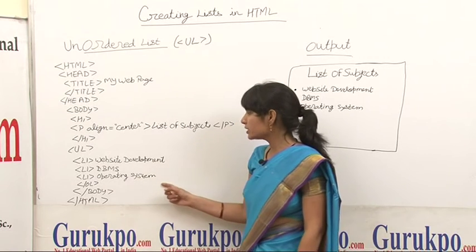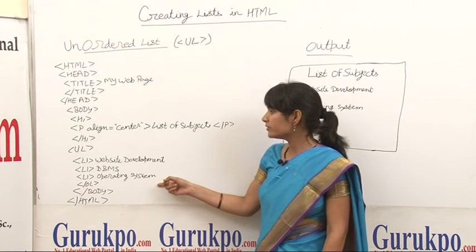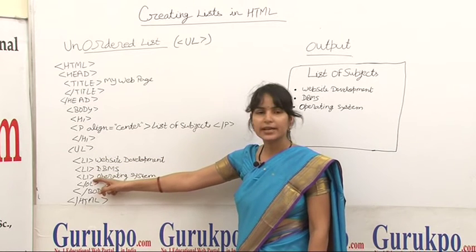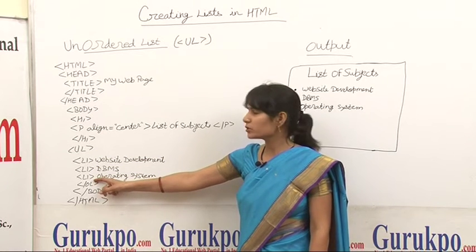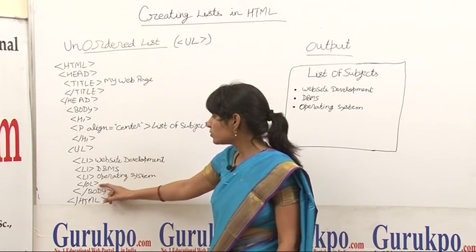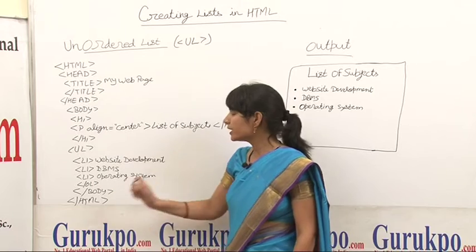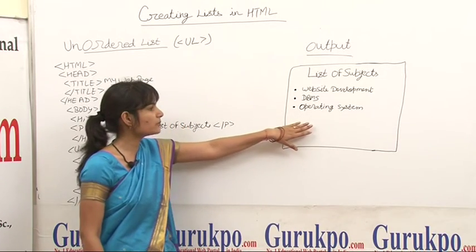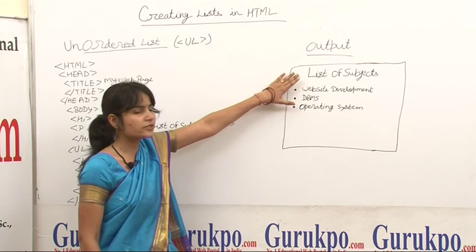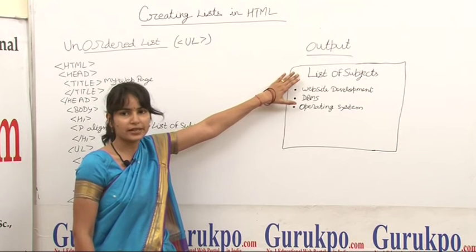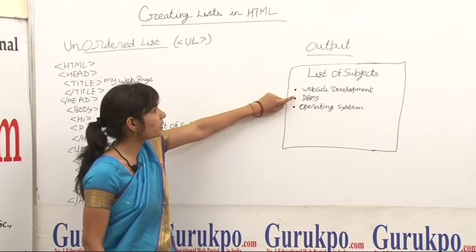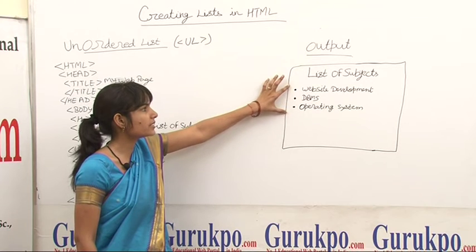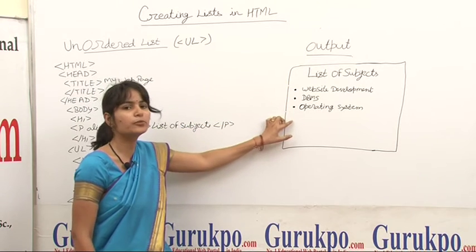Here we again show three items — website development, DBMS, and operating system — using the LI tag inside the UL tag to show the list. Then we close the UL tag, body tag, and HTML tag. The output of this program shows 'list of subjects' as a heading and the three items — website development, DBMS, and operating system — displayed as a bulleted list.